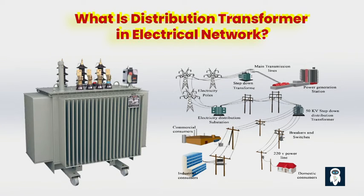What is a distribution transformer? A distribution transformer is a device that transfers power from the electrical grid to your home, businesses, and commercial buildings. They play a crucial role in the power distribution system by stepping down the voltage from higher levels, typically found in transmission lines, to lower levels suitable for consumer use.